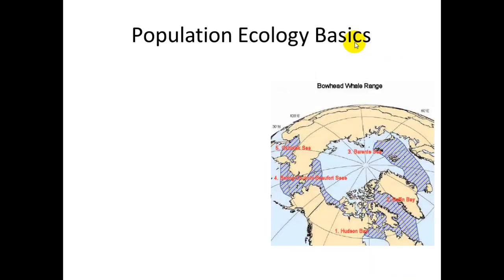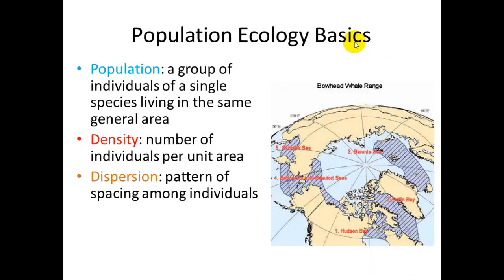Going back a bit — a population is a group of individuals of the same species that lives in the same general area. It's not the same as a community, but the population itself has its subgroup within the larger species. The population I was looking at inhabited the Bering-Chukchi-Beaufort Sea area, number four, but there are other populations in other areas of the Arctic.